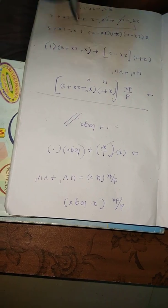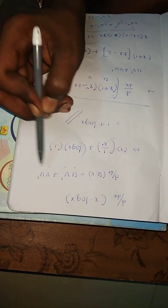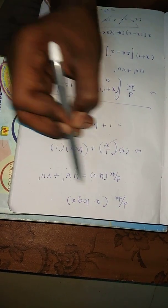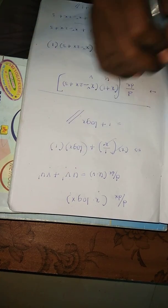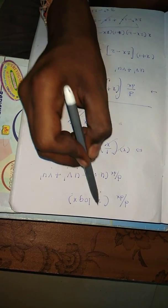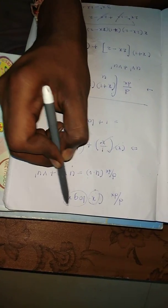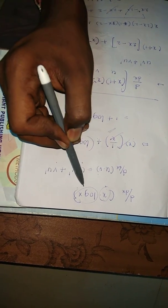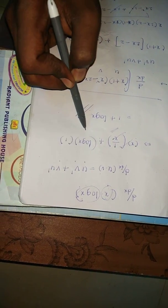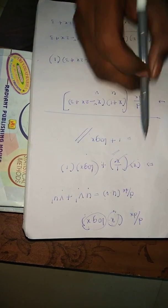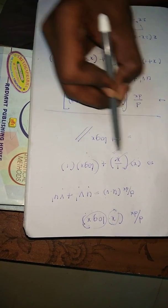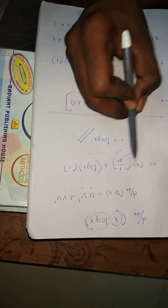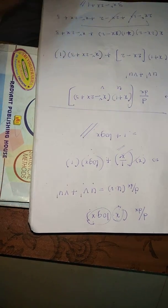Now the product rule (uv rule): d/dx of uv = u·v' + v·u'. Example: d/dx of x·log x. Here u = x and v = log x. So: u·v' = x·(1/x), and v·u' = log x·1. Therefore x·(1/x) = 1, plus log x·1 = log x. The answer is 1 + log x.